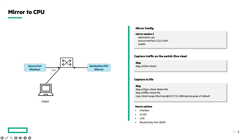This will make sure to clean up the previous packet capture. Then you start a new packet capture using the command 'diag utilities tshark file', and this will save the packet capture to a file on the switch. After you capture the traffic, you can copy the packet capture to a remote destination using the command 'copy tshark pcap'. The remote destination can be an SFTP or TFTP server, and you can also specify the VRF. By default it will be VRF default, but if you want to specify another VRF, it is possible.